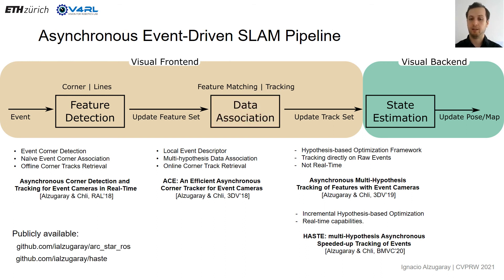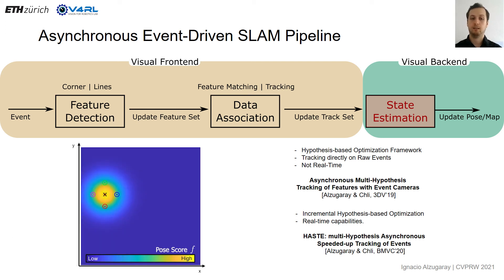Most of these works are publicly available. We are now investigating how all these pieces can be put together to estimate the state — the pose or the map — in the visual backend in an event-driven fashion. We already have some hints that it could be done using the same hypothesis-based optimization but with a pose score instead of an alignment score.